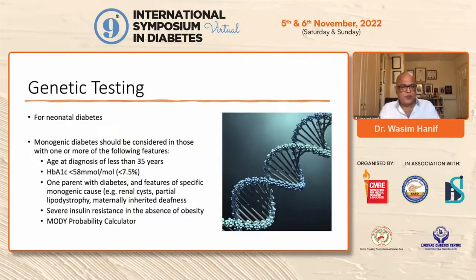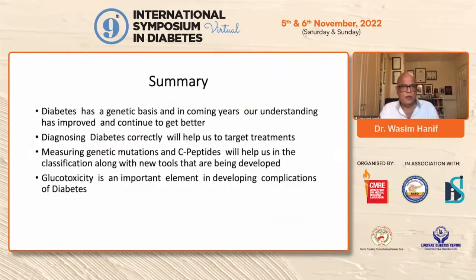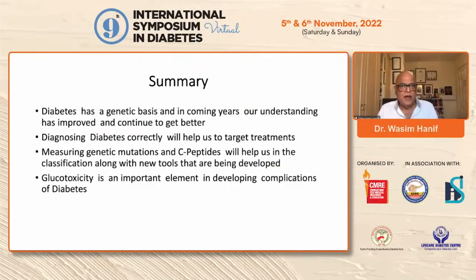Genetic testing is usually done for monogenic diabetes. There is an excellent MODY probability calculator developed by Exeter University by Andrew Hattersley and his group, which is easily available online — you input a number of factors and it gives the risk of this being MODY and suggests whether the person needs genetic testing. In summary, diabetes has a genetic basis and understanding continues to improve. Correctly diagnosing diabetes, especially in ethnic or South Asian populations, is becoming increasingly important as it will help us target treatments. Measuring genetic mutations and C-peptide will help us in classification, along with new tools being developed. Thank you very much.